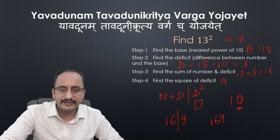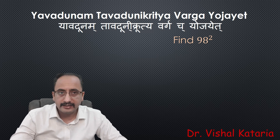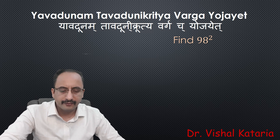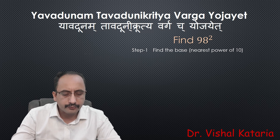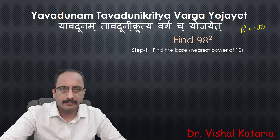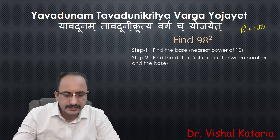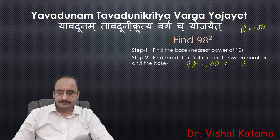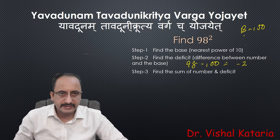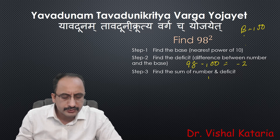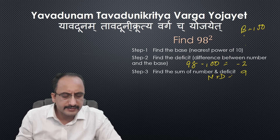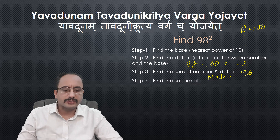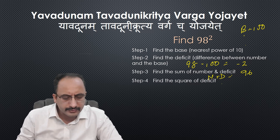Let's take our next example: find the square of 98. Step 1: find the base — the nearest power of 10 is 100, so base B equals 100. Step 2: find the deficit. In this case the deficit is negative because the number is less than the base — deficit is minus 2, and we will consider the sign. Step 3: N plus D — 98 plus (−2) equals 96. Step 4: square of the deficit — square of minus 2 is plus 4, so D² is 4.